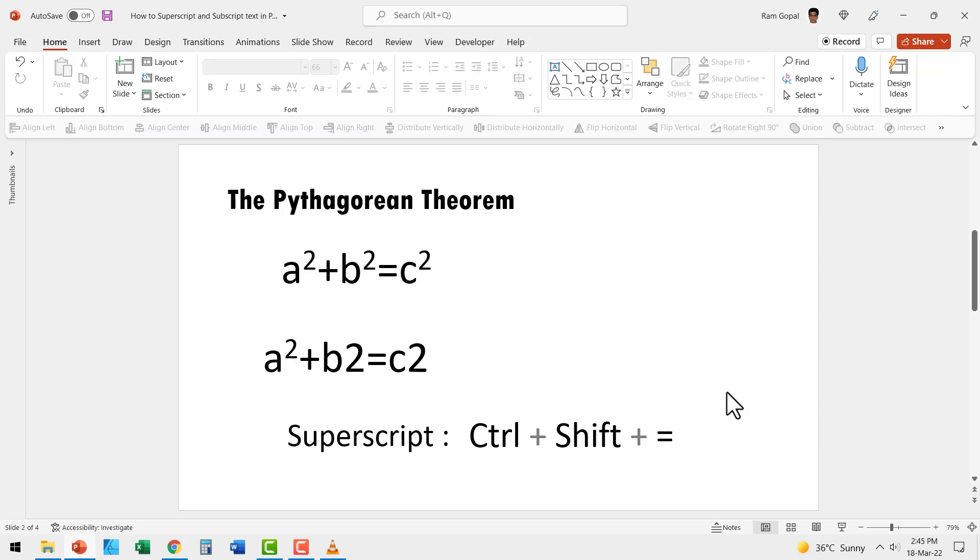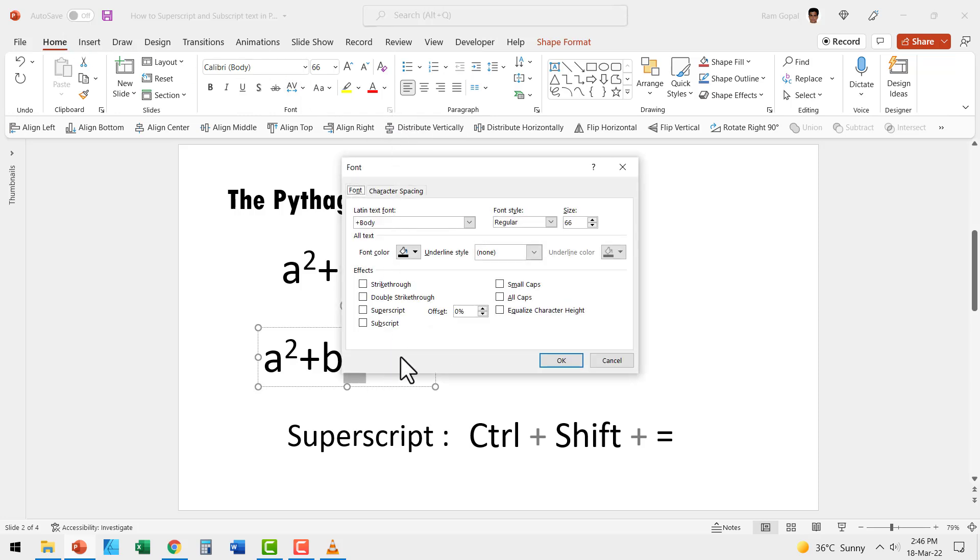Another way to convert a number or text into a superscript is you select the text or character, then go to the Home tab and the Font group. You expand the group by clicking on this arrow and you select the option here called superscript and you say OK.